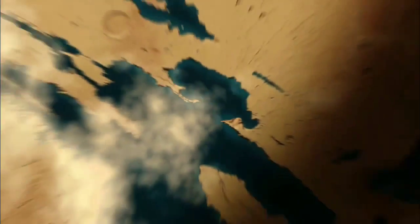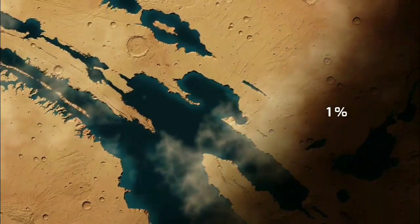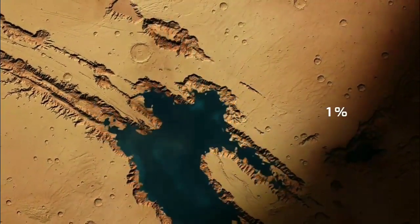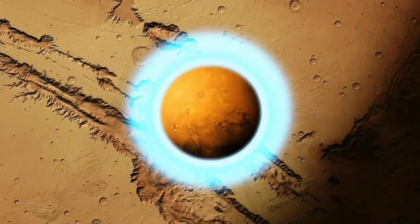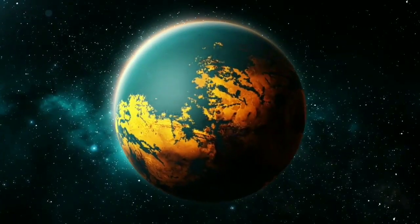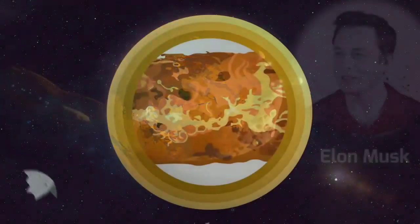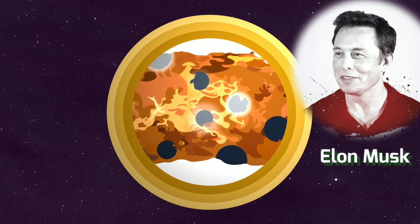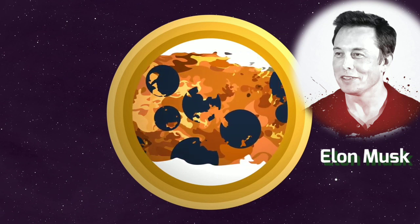On Mars, the pressure of the atmosphere is less than 1% of the pressure of Earth's atmosphere. Any liquid water on the surface would very quickly evaporate or freeze. There are a few different schools of thought on how we could heat up Mars' atmosphere and make it more hospitable to life. Elon Musk suggested, for example, that we could transform Mars by exploding nuclear bombs over its polar caps.